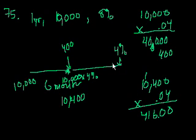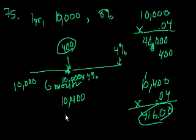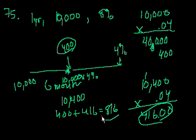So what was the total amount of interest? So it's going to be 416 plus 400, which is $816, right? 400 plus 416 is equal to $816, which is choice C.